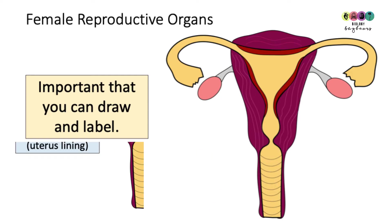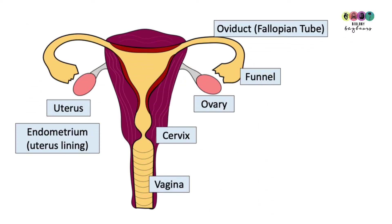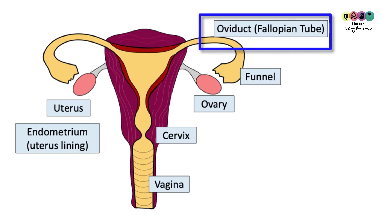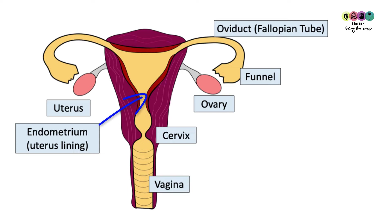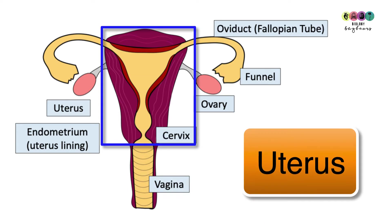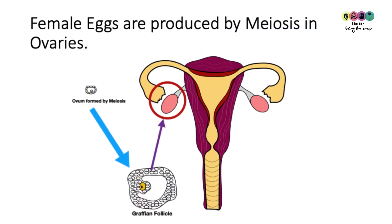The key to this chapter is diagrams. A diagram of the female reproductive organs should always have the following labels: start with the vagina and go upwards, then the cervix, which is the entrance into the uterus. You have two ovaries, and at the end of the fallopian tubes or oviducts you have the funnel. The lining of the uterus is known as the endometrium, and the whole structure is the uterus, otherwise referred to as the womb.